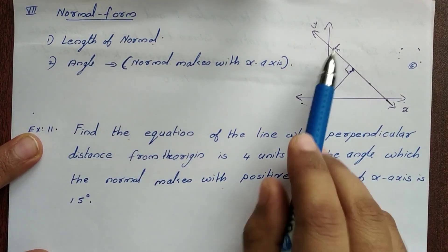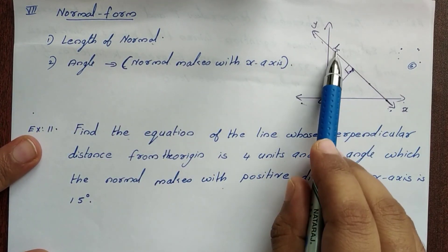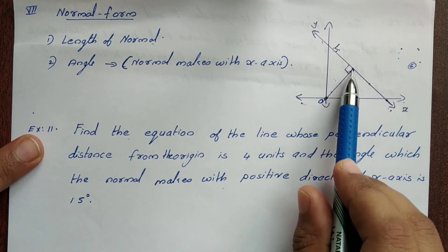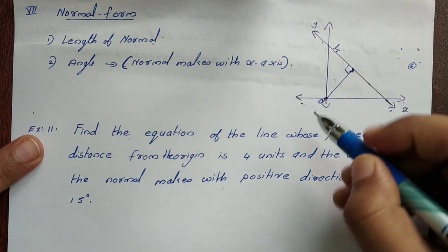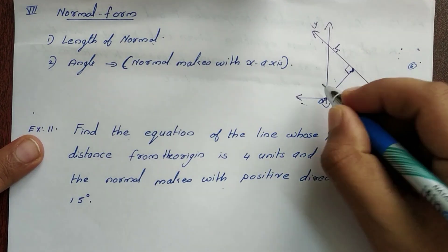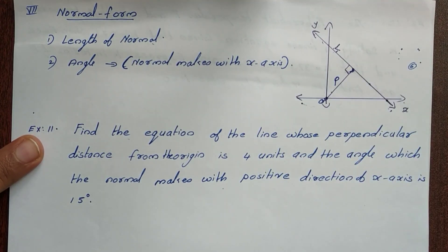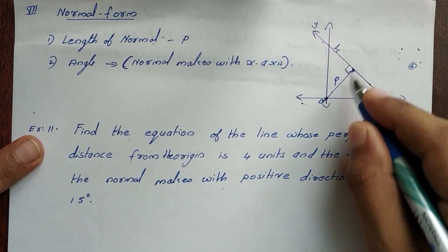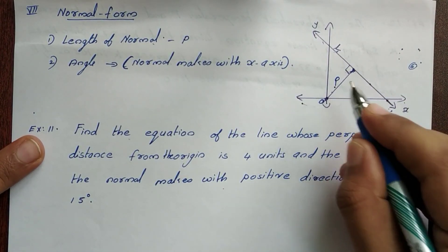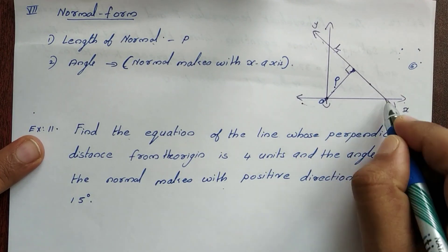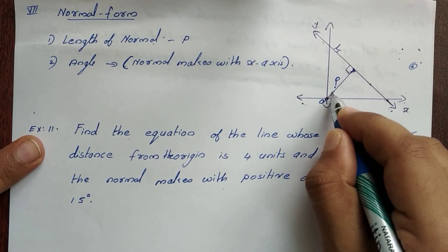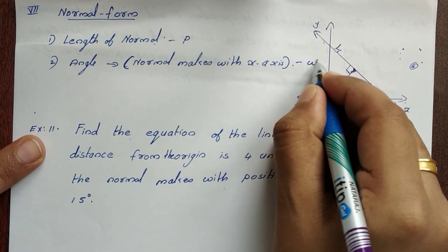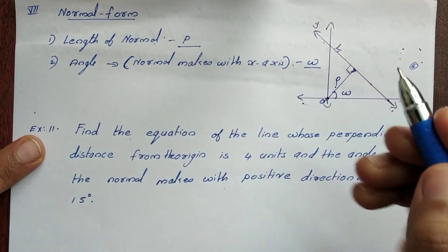In normal form, we will take a straight line. The straight line is perpendicular from the origin. The perpendicular distance is p — that is, the length of the normal. This p is perpendicular. At the same time, the angle that p makes with the x-axis is omega. That is, it is perpendicular, and two points are perpendicular.